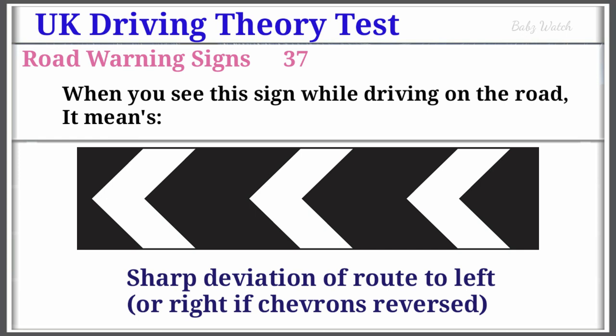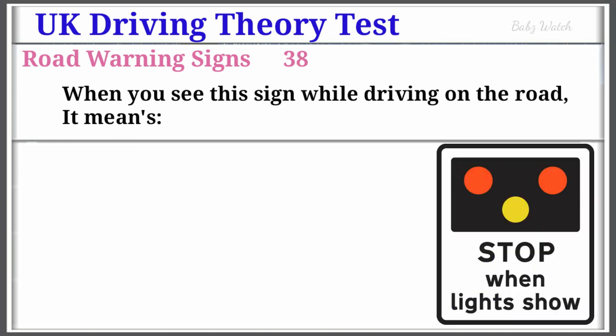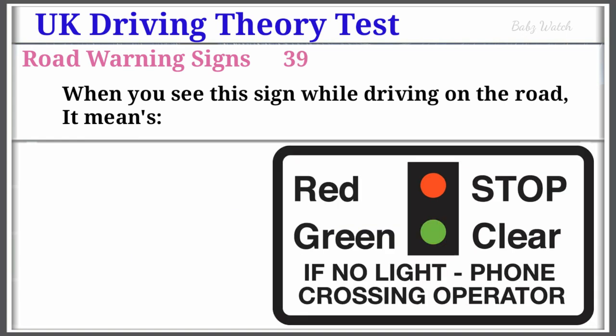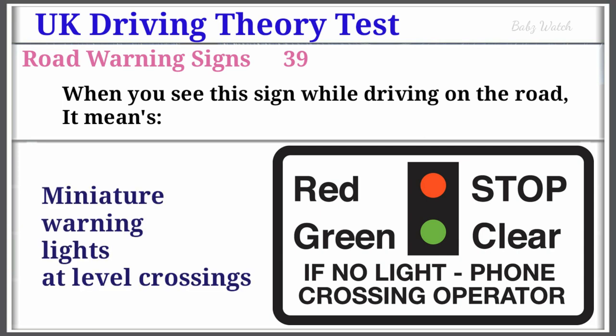UK Driving Theory Test Road Warning Sign Number 38: When you see this sign while driving on the road, it means Light Signals Ahead at Level Crossing, Airfield or Bridge. Warning Sign Number 39: When you see this sign while driving on the road, it means Miniature Warning Lights at Level Crossing.